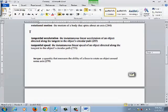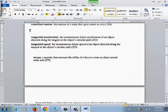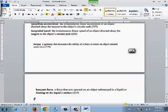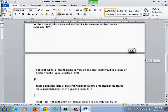Tangential acceleration is the instantaneous linear acceleration which is directed along the tangent of the circular path. Tangential speed is the linear speed of the object directed as a tangent of the object's circular path. The torque is the quantity that measures the ability of the force to rotate an object around some axis.